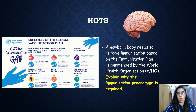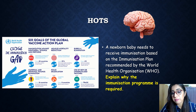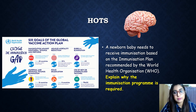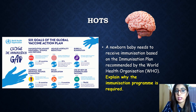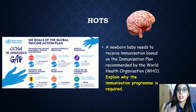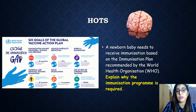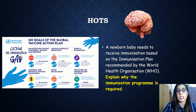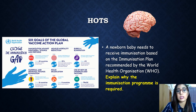Question four: a newborn baby needs to receive immunization based on the immunization plan. Explain why. Answer: a newborn needs immunization because the baby does not acquire immunity against certain diseases from the mother during the fetal stage. After the baby reaches six months, the natural passive immunity received from the mother decreases. The baby may be exposed to various infectious diseases such as measles and chickenpox, and is unable to fight infections without acquired immunity.